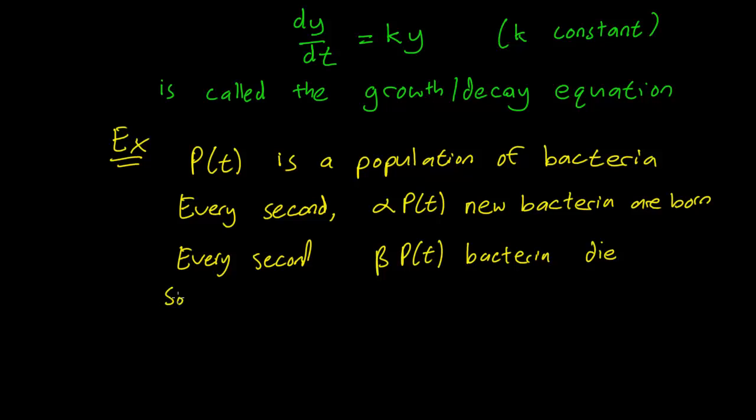So the population P(t) changes by (alpha minus beta) P(t) every second.